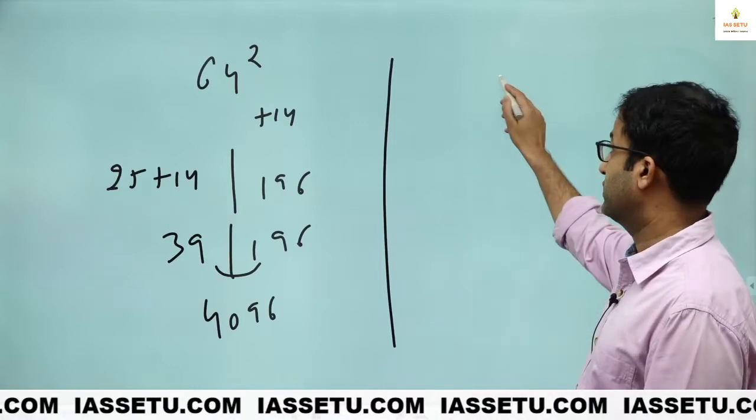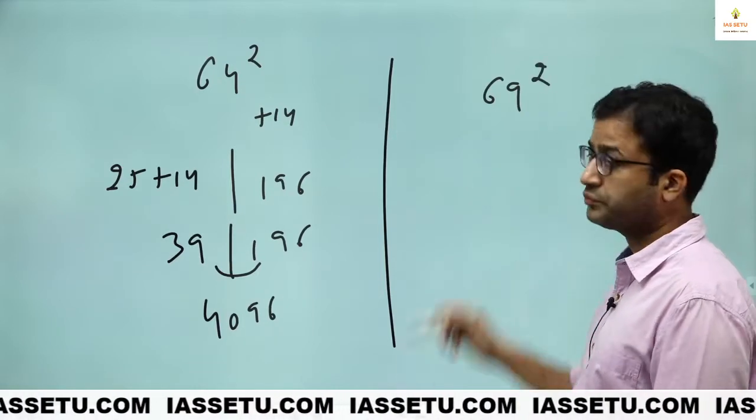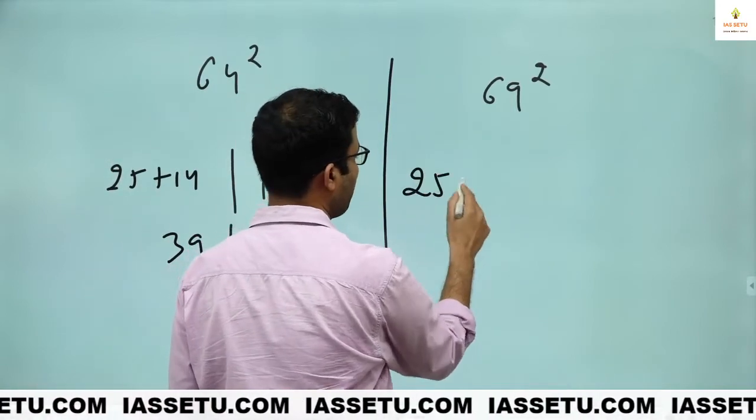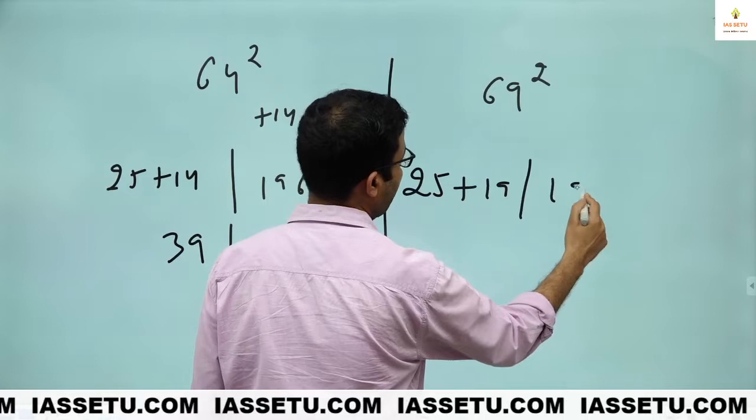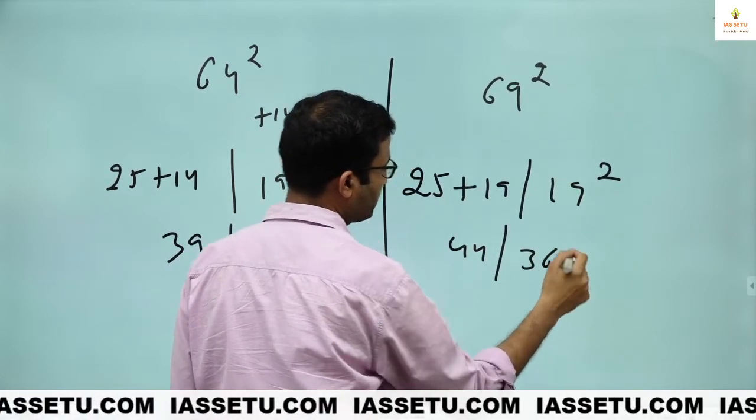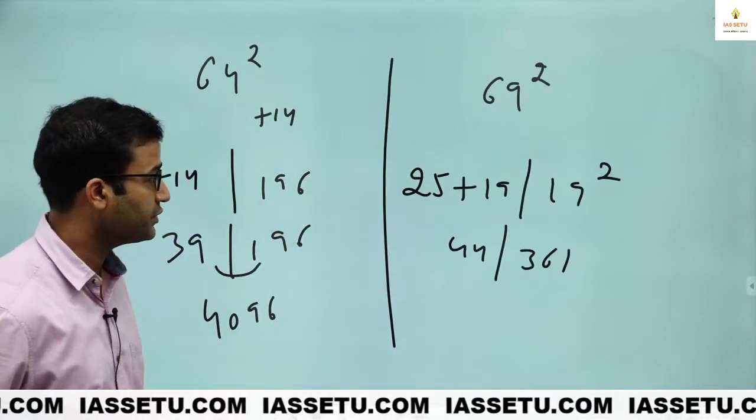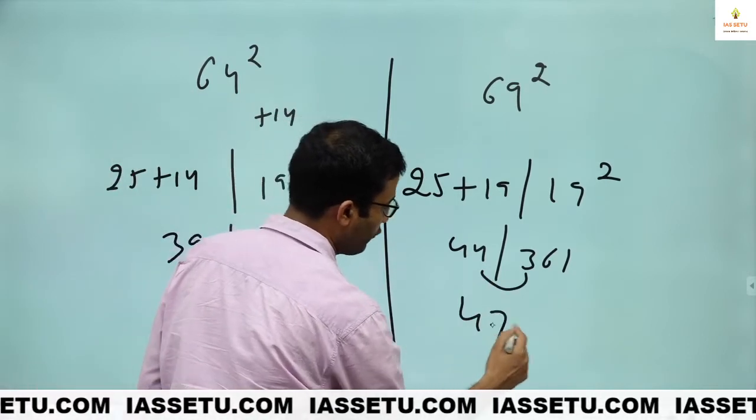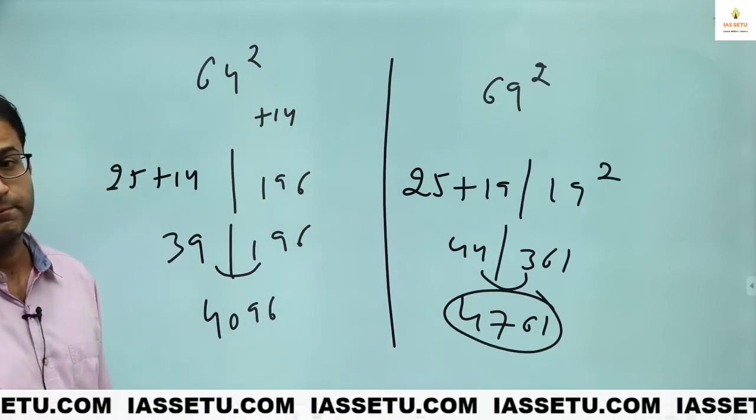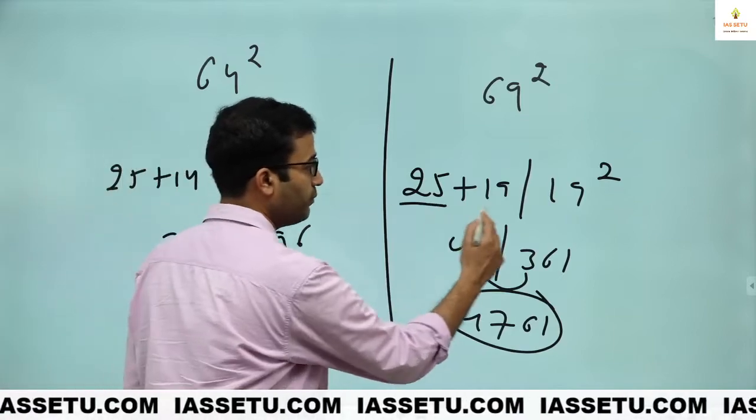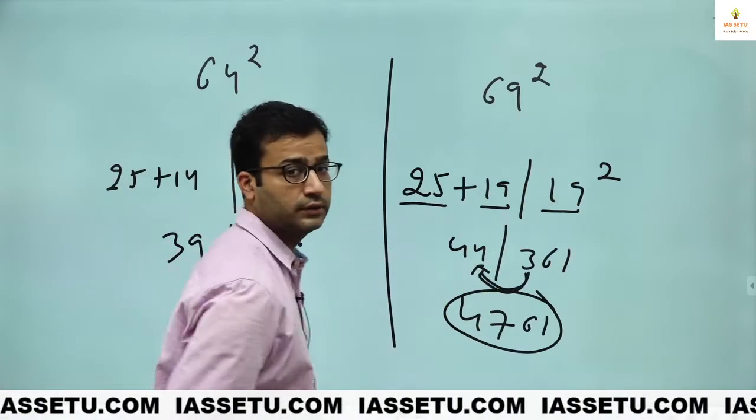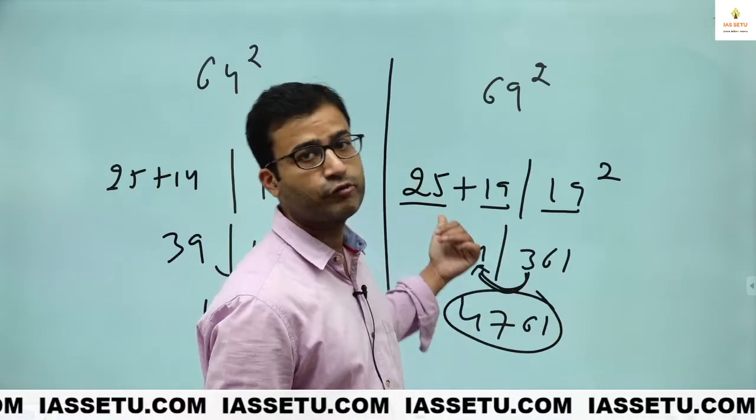Now you try. 69 square. It is plus 19. 50 plus 19. So 25 plus 19. This side 19 square. So this is 44. This is 361. 19 square is 361. So you add 3 and get 4761. 69 square is 4761. 25 okay. Plus 19 okay. 19 square okay. This carry forward. Because we have to take unit place, 10 place, extra we have to forward.